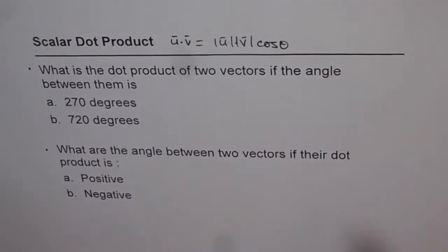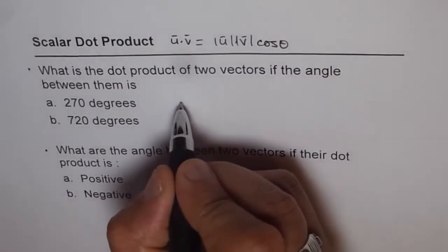What is cos of 270 degrees? Cos of 270 degrees is 0. And therefore, this answer will be 0.